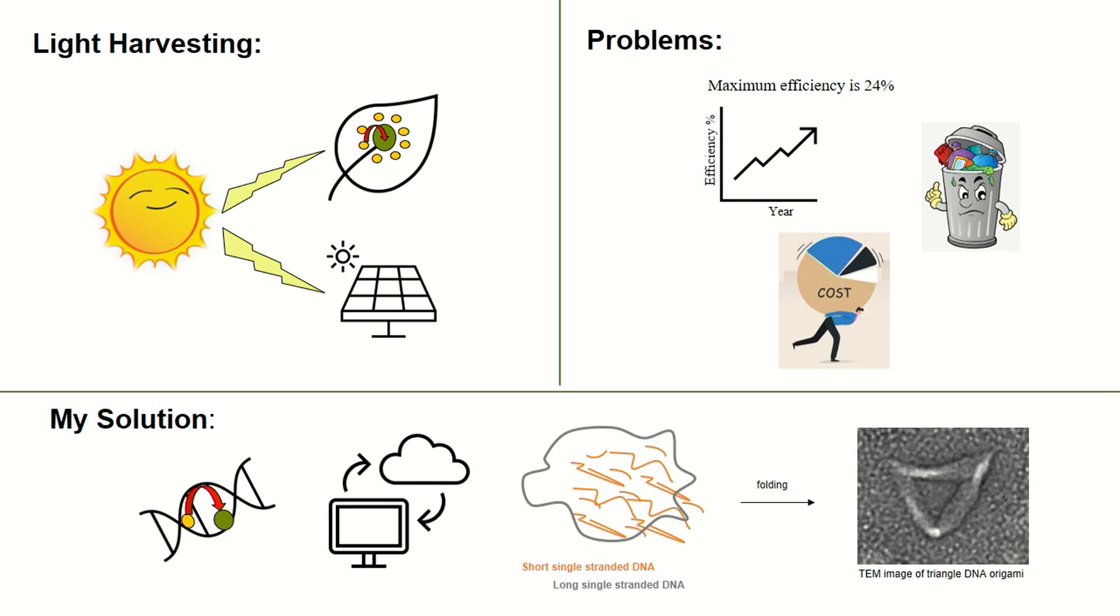But for widespread use of solar cells, there are still some barriers. The maximum efficiency of solar cells is still 25%. In addition, the solar panels contain some toxic materials that are toxic for the environment and make them a challenge for recycling, so they're not environmentally friendly. In addition, the cost of these panels is not affordable for most people.